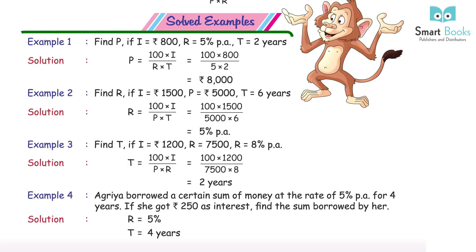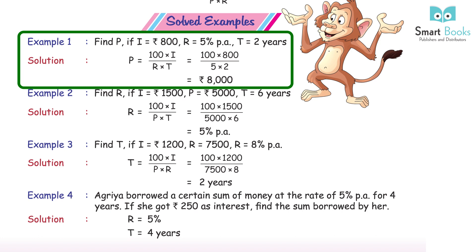Solved Example 1: Find P if I = Rs 800, R = 5% PA, T = 2 years. Solution: P = 100 × I ÷ (R × T) = 100 × 800 ÷ (5 × 2) = Rs 8,000.